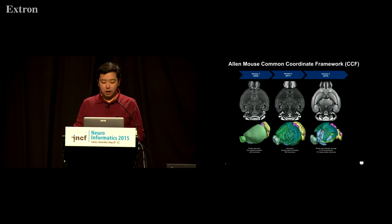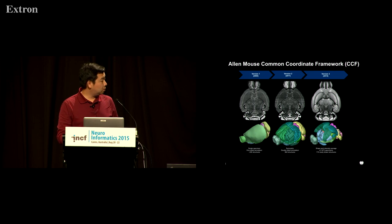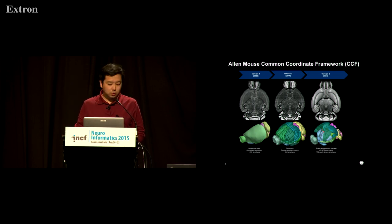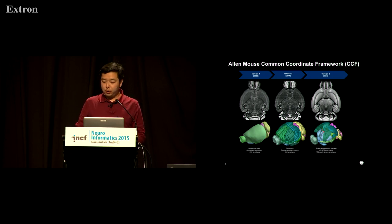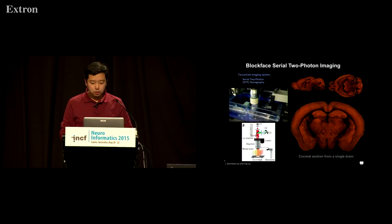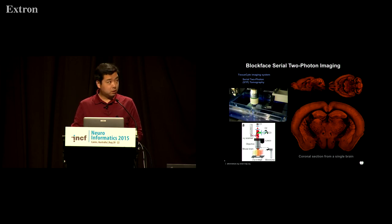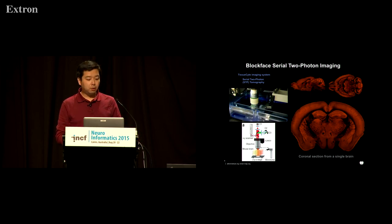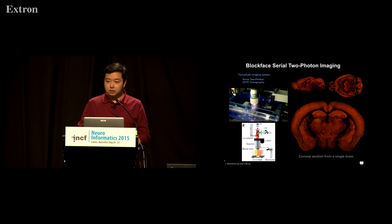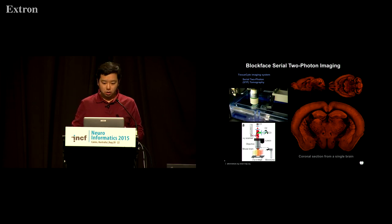The major motivation driving us to do version three is that the Nissl-based atlas is not really smooth in 3D due to distortion introduced during sectioning, staining, and tissue transportation. So this time we decided to move to a new modality: two-photon imaging. It's a block-face imaging system, which means the block face is imaged instead of thin sections cut from the brain, assuring a really smooth 3D volume by stacking together the 2D coronal sections.